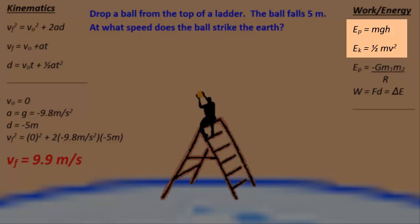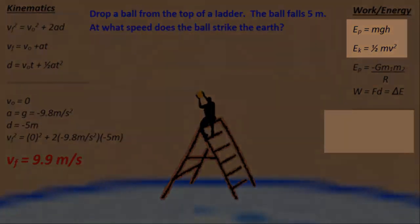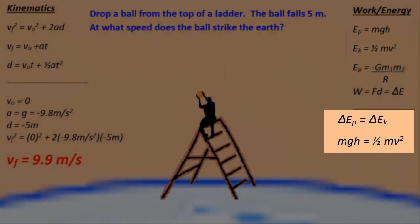So what we're going to use is conservation of energy, where we say that the change in the potential energy of the ball is equivalent to the change in kinetic energy. In other words, the initial potential energy of the ball all eventually gets transformed into kinetic energy as it hits the ground, as we see in the equation on the lower right. And if we solve this equation, we see that the masses cancel on either side.